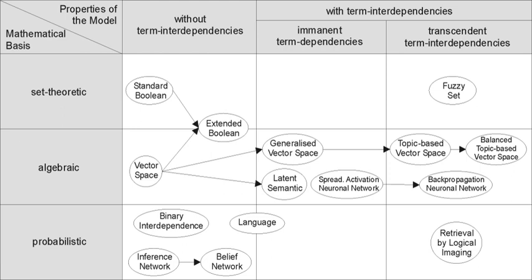Feature-based retrieval models view documents as vectors of values of feature functions, and seek the best way to combine these features into a single relevance score, typically by learning-to-rank methods. Feature functions are arbitrary functions of document and query, and as such can easily incorporate almost any other retrieval model as just another feature.